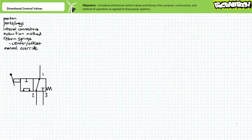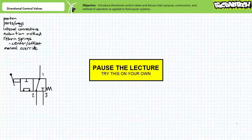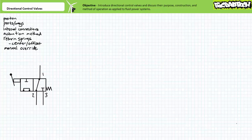Let's again put your newfound knowledge of directional control valves to the test. Pause the lecture and see if you can determine the number of positions, the number of ways, the actuation method, and the deactivated state of this directional control valve. This is a two-position, three-way, manually actuated directional control valve, spring offset to a deactivated position that blocks flow at port three and allows bidirectional flow from one to two. In its activated state, it allows bidirectional flow from two to three and blocks flow at one.